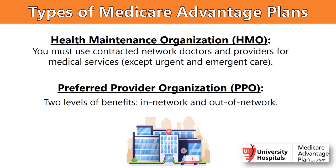There are two types of Medicare Advantage plans. An HMO, or Health Maintenance Organization, requires you to use the network of providers and doctors to utilize medical services, except in urgent or emergent situations. A PPO, or Preferred Provider Organization, offers two levels of benefits: in-network or out-of-network.